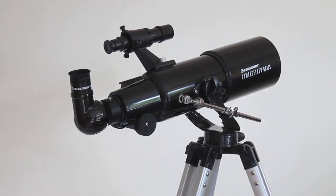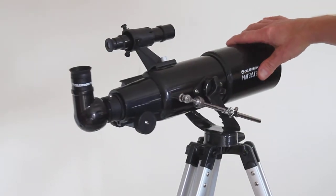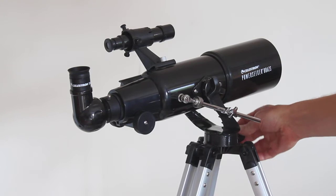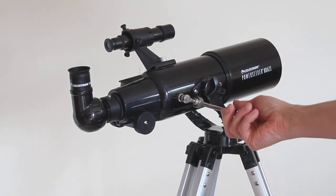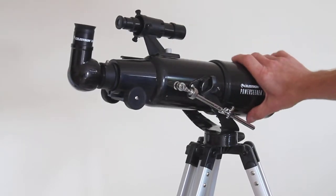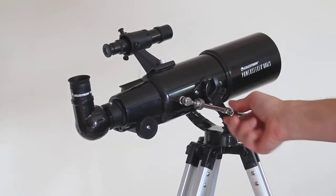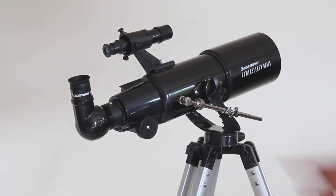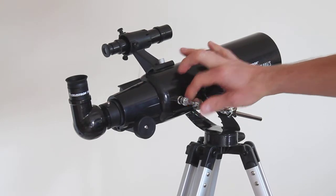The AZ is very easy to use, very smooth left and right movement with a little tightening knob there. For up and down movement, you can slacken that off and it moves up and down very freely, or you can tighten that into place. And then here you've got your fine tuning for up and down movement.